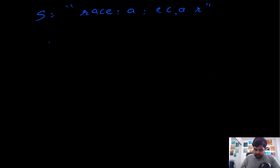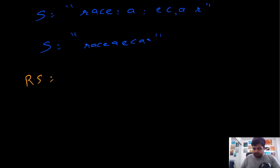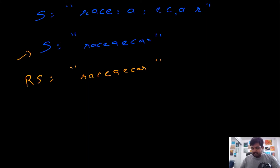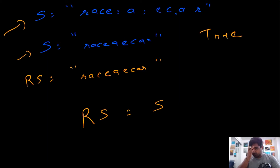First we create a string from the original input where we get rid of all non-alphanumeric characters. Once that's done, we reverse the string to create a new reverse string. If we compare this reverse string with the cleaned string and they possess the same value, we can determine the original input is actually a palindrome and return true.